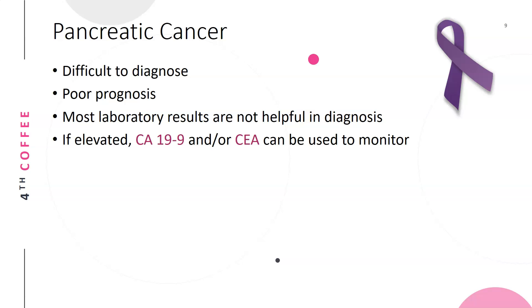Pancreatic cancer is difficult to diagnose and there is usually a very poor prognosis. Most laboratory results are not helpful in diagnosis. If elevated, CA19-9 and/or CEA can be used to monitor, but they would have to be present at diagnosis for it to be worthwhile.